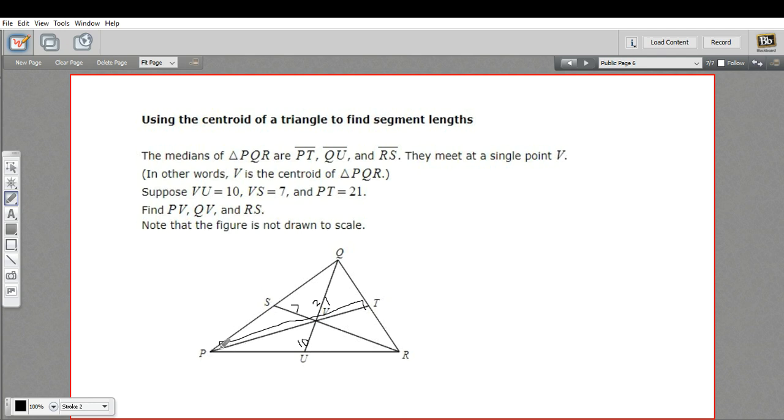PV is this length right here. That's the longer part of the median, and we know the centroid cuts it so that the longer part is two-thirds of the whole length. So we would want two-thirds of 21. Let's see, 20 divided by 3 is 7 times 2 is 14. So PV is 14.